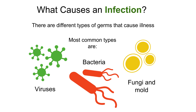Other signs of infection can be fever, pus, pain, cough, or trouble breathing. There are different types of germs — microorganisms that cause infections — including bacteria, viruses, and moulds and fungi.